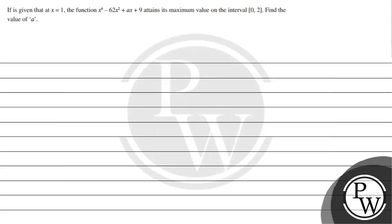Hello, let's see this question. If it is given that at x equal to 1, the function x to the power 4 minus 62x square plus ax plus 9 attains its maximum value on the interval [0,2], find the value of a.